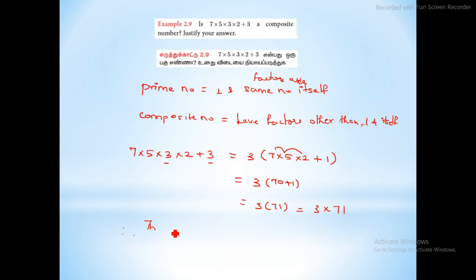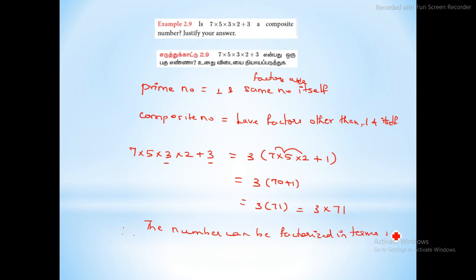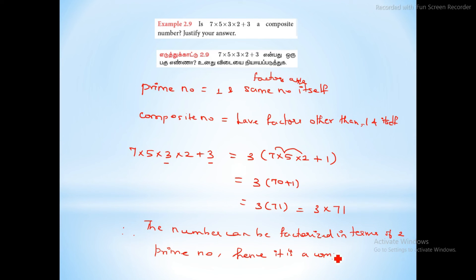The number can be factorized in terms of two prime numbers. Hence it is a composite number.